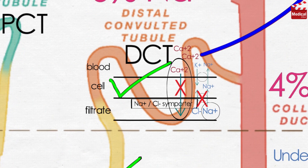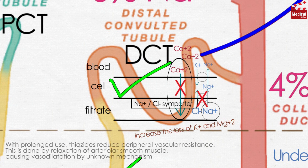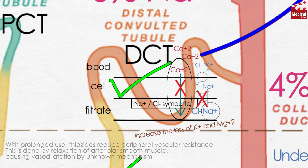Thiazides also increase the loss of potassium and magnesium. With prolonged use, thiazides reduce peripheral vascular resistance. This is done by relaxation of arteriolar smooth muscle, causing vasodilation by an unknown mechanism.